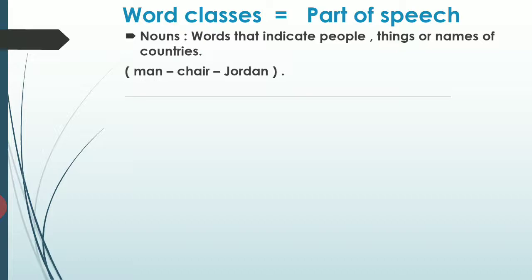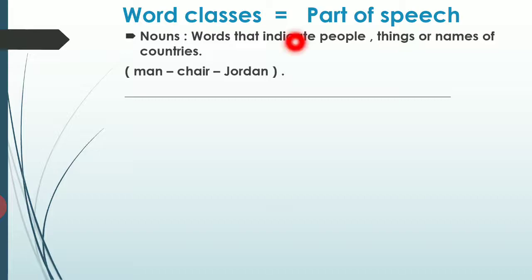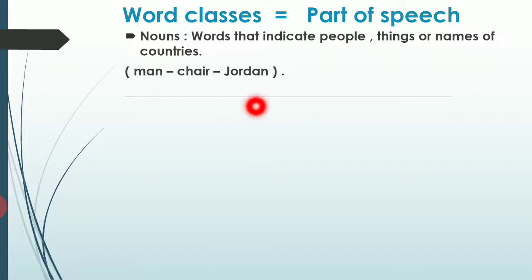Now what are the nouns? Let's make a quick revision of the parts of speech or word classes. The nouns are the words that indicate people, things, or names of countries. فالاسماء هي كلمات تدل على أشخاص، أشياء، أو أسماء البلدان. Like when we say man, chair, or Jordan.